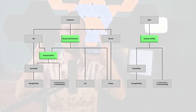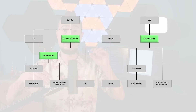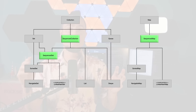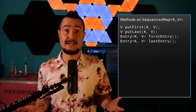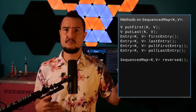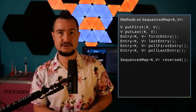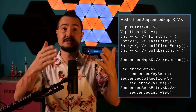Third: SequencedMap, which extends Map and is further extended by SortedMap and implemented by LinkedHashMap. It offers methods putFirst, putLast, firstEntry, lastEntry, and pollFirstEntry and pollLastEntry. It also has a reversed() method that works analogously to the one on SequencedCollection. Furthermore, it offers sequenced views of its key set, values, and entry set.